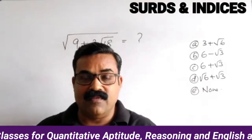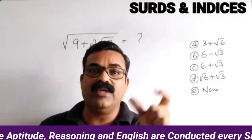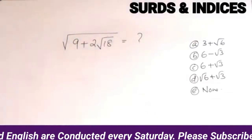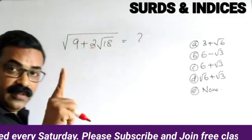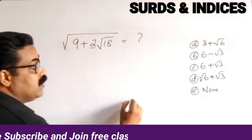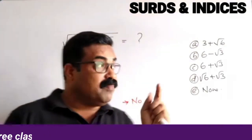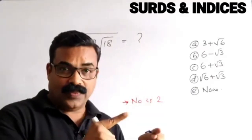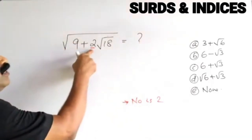Understand this very clearly. Once I explain this, this type of question will be very easy for you. There is a shortcut method for solving this type of question. Step number one: make sure that this coefficient — the number in front of the inner square root — is 2. If the number given is not 2, you have to make it 2. Then only you can use this shortcut method.